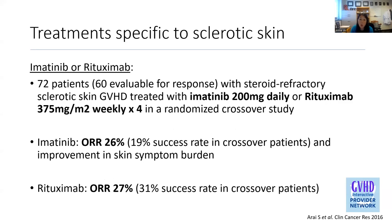Another study looked at imatinib versus rituximab, a CD20 monoclonal antibody, specifically in sclerotic skin GVHD. This was a crossover study where 72 patients were treated, 60 available for response. For imatinib, the overall response rate was 26%; for rituximab, it was 27% — similar response rates. There was also some success in crossover patients, who represent an even more difficult group to treat, showing some signal of efficacy in very refractory sclerotic skin GVHD patients.